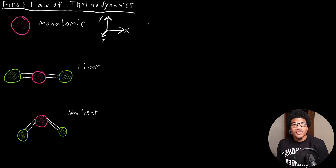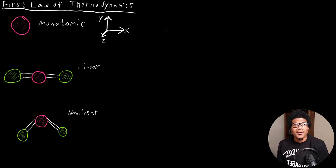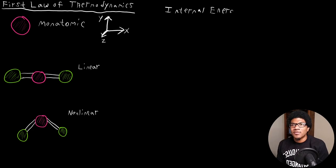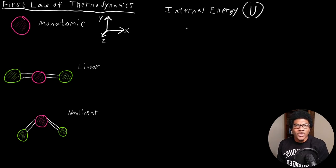In this video, we're going to discuss the first law of thermodynamics. In order to discuss the first law of thermodynamics, we need to introduce a quantity called the internal energy. Internal energy is just the energy associated with the random motions and vibrations that can happen to molecules — it's associated with the motion of molecules. We use the letter U, a capital U, to denote internal energy.